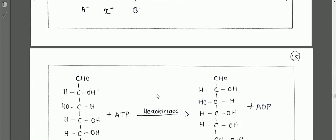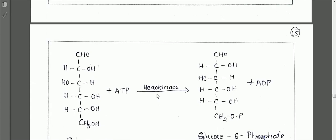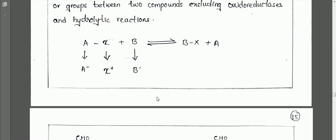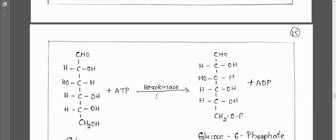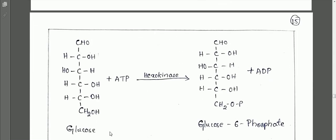An example for class 2 is the hexokinase enzyme, which acts on glucose to form glucose-6-phosphate.